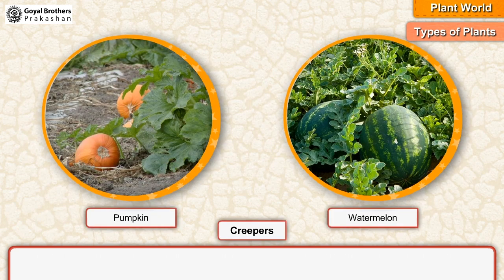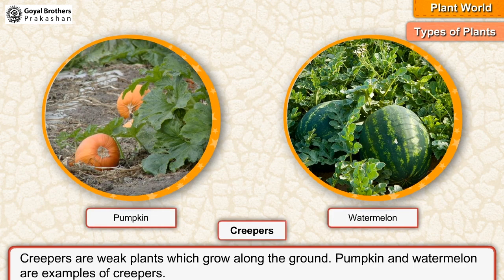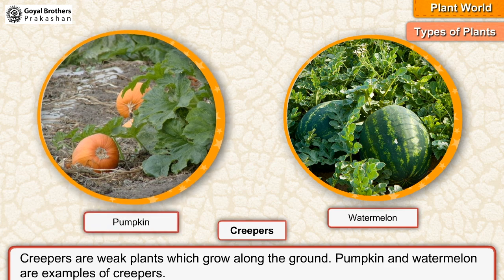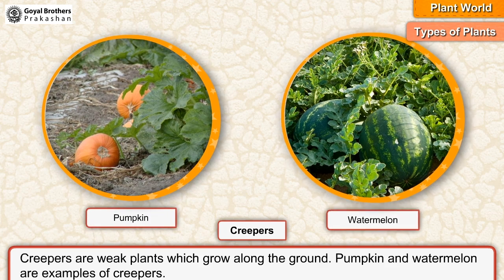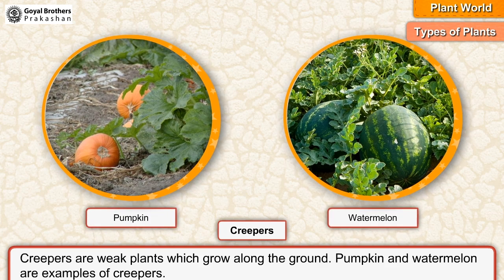Creepers are weak plants which grow along the ground. Pumpkin and watermelon are examples of creepers.